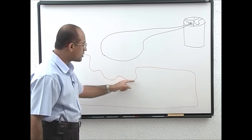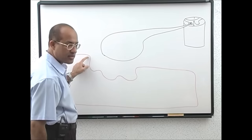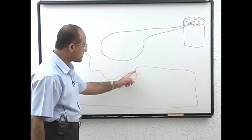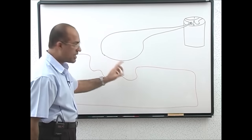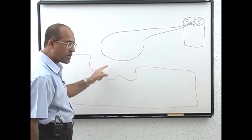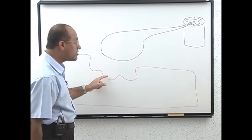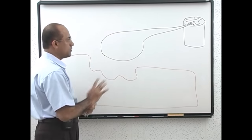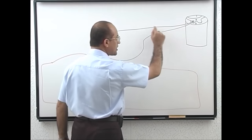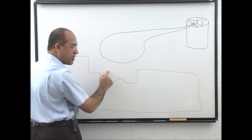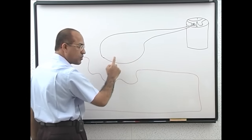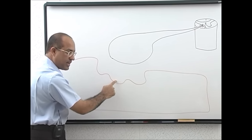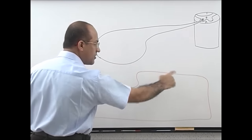The motor end plate is the part of the muscle membrane connected with the motor neuron. This plate receives the chemical message from the nerve ending and converts it into an electrical message. So first, electrical signals are converted into chemical signals at the nerve ending, then chemical substances stimulate the motor end plate, and then electrical signals are generated again at the motor end plate.